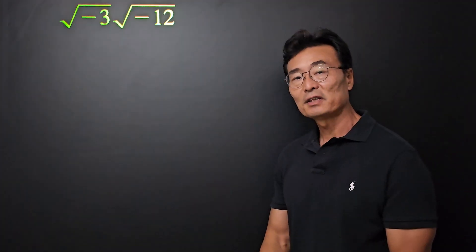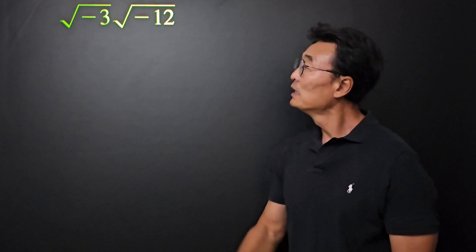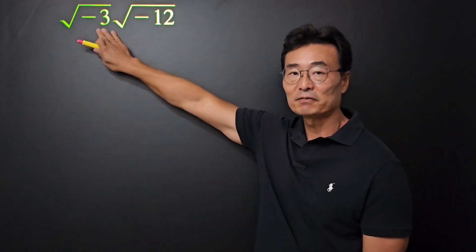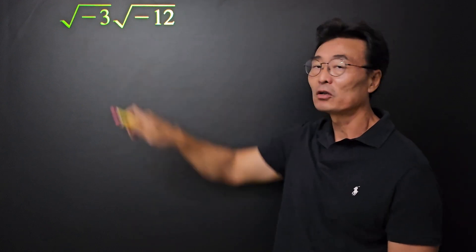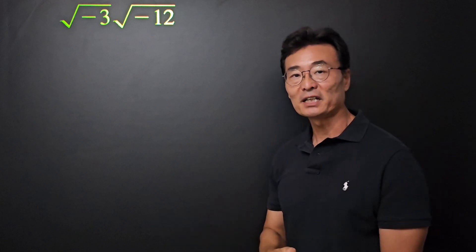Here is a rather innocent looking question that can be confusing. When you have square root of negative number, you cannot just go ahead and multiply with the other square root of a negative number.